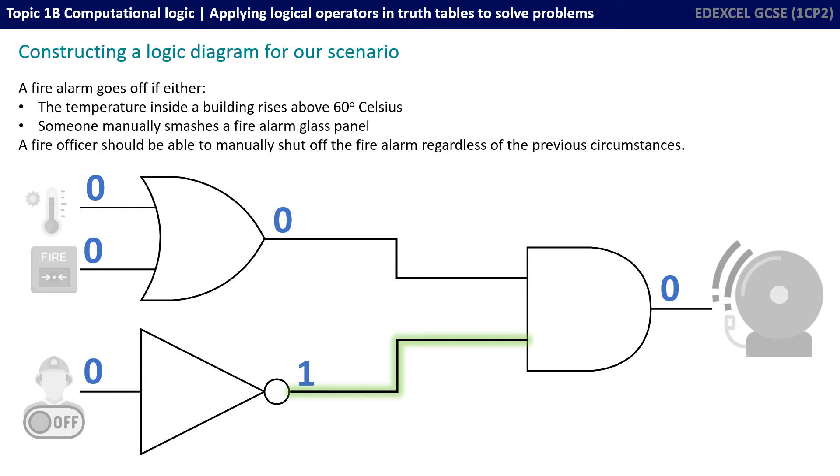The temperature isn't above 60 degrees, so we've got a zero there in the OR gate. No one smashed a fire alarm point, so that's a zero. And our fire officer hasn't activated the manual override.